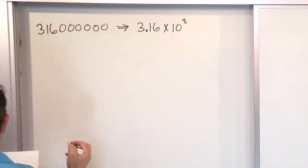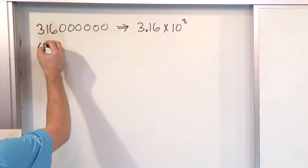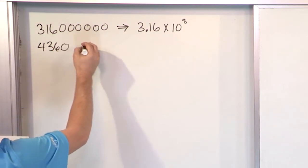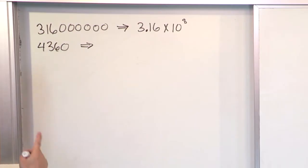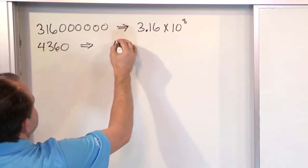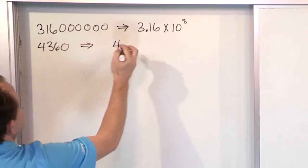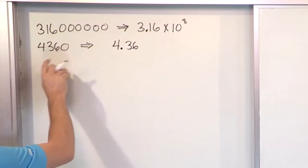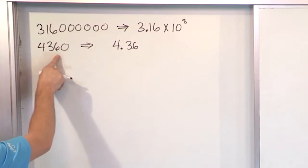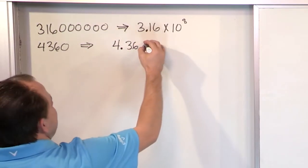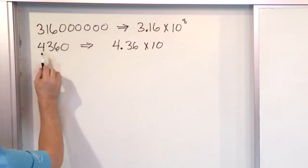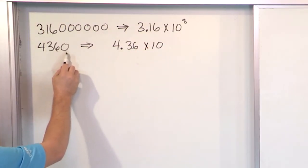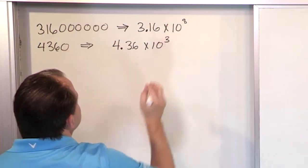Let me give you some more examples. What if you have the number 4360? I just write the first digit down, put a decimal, and then write the other digits, 3, 6. I don't even need to write this zero here. All I need is the non-zero numbers. And then I have to write times 10, and then I just count. If the decimal were here, it'd be one, two, three places. So times 10 to the three.